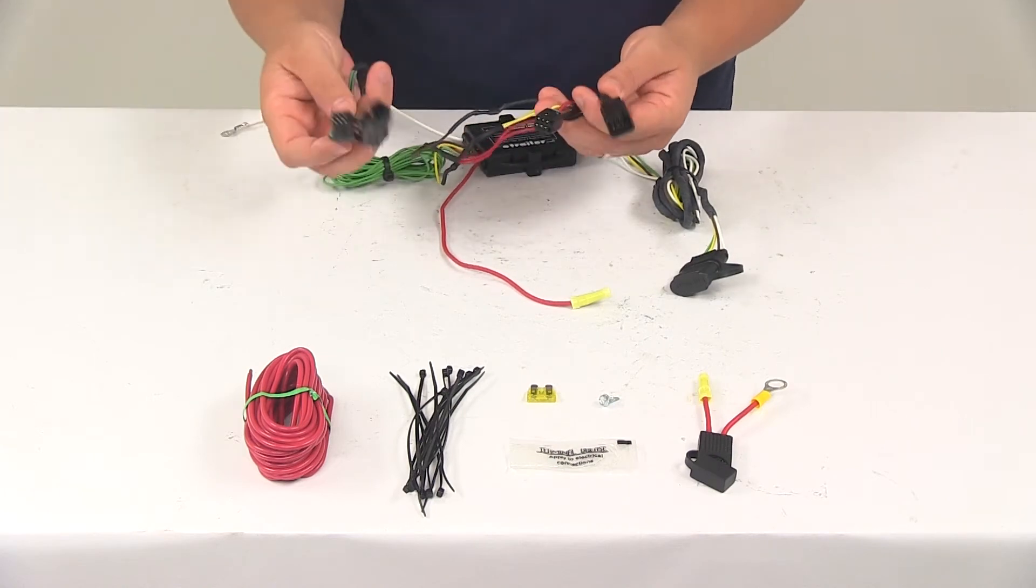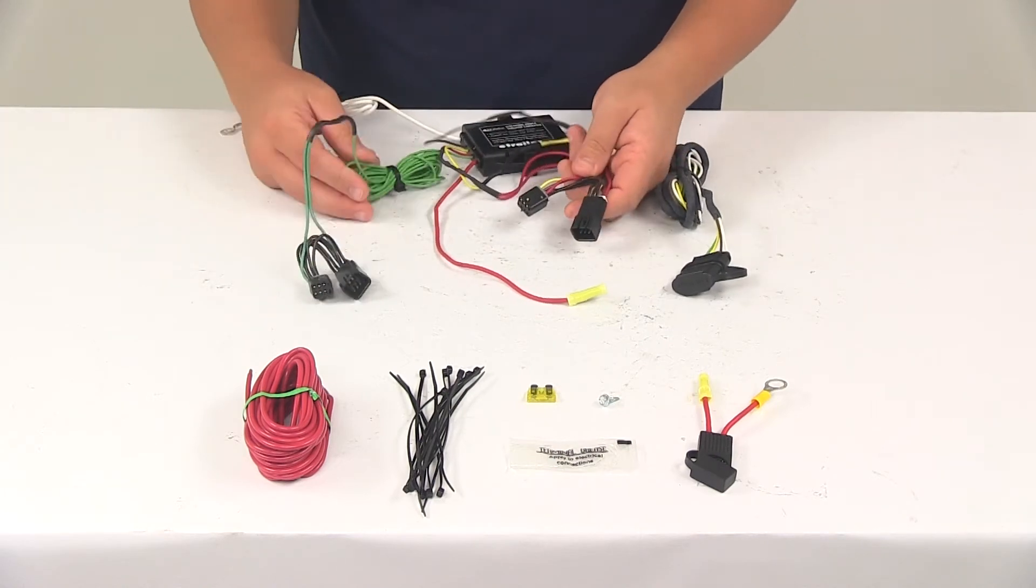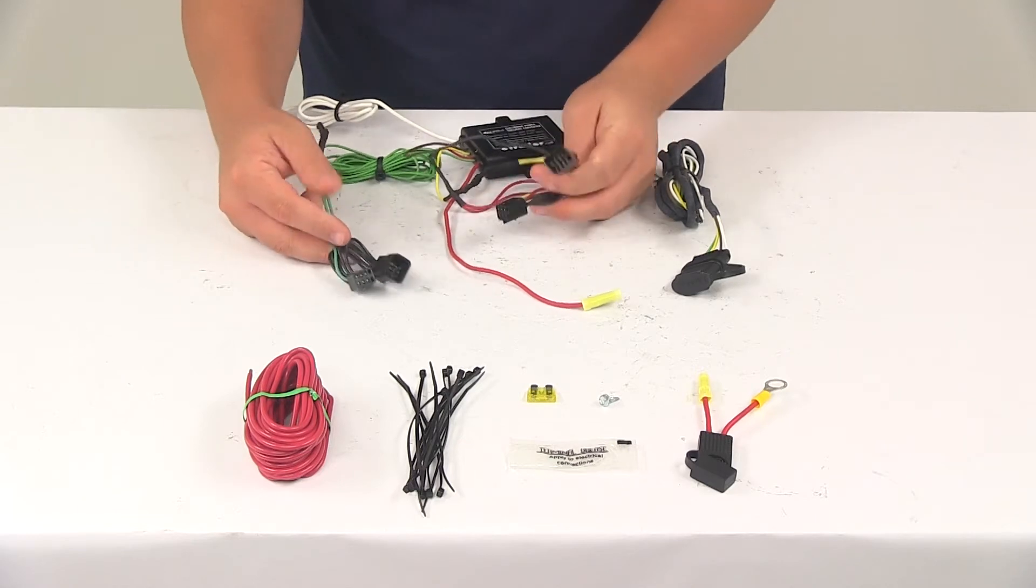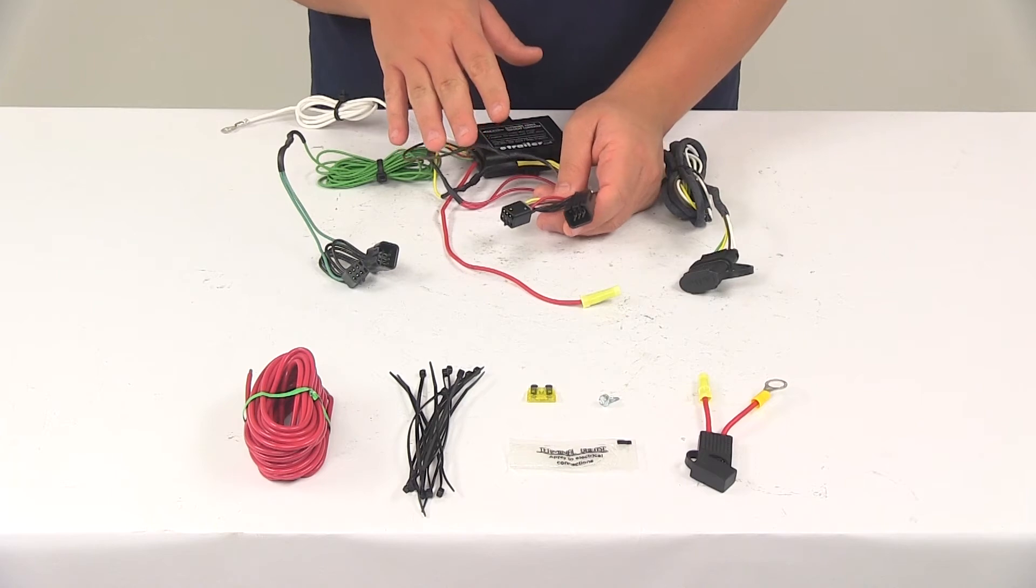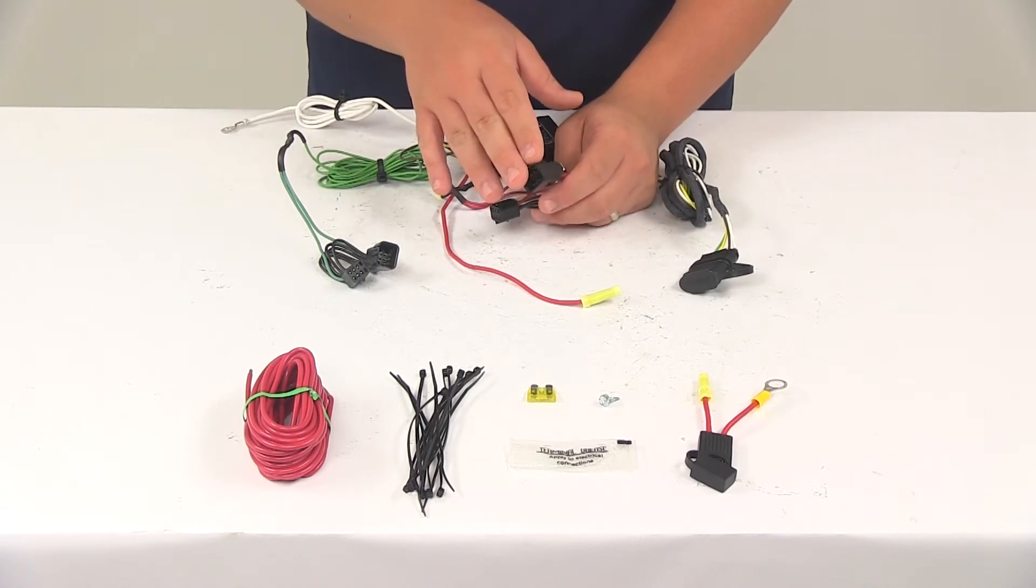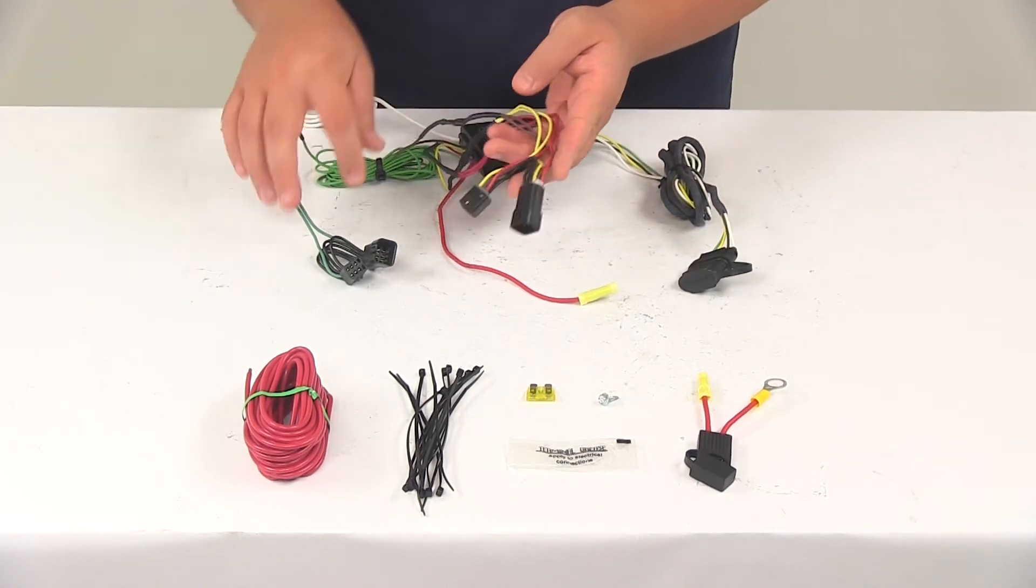You got two connectors right here. One's going to go to the passenger side, one's going to go to the driver's side. This is a custom fit wiring harness, so the plugs on the harness are going to match up perfectly with the ports on the vehicle. They're going to push together and snap lock together for a nice tight secure fit.